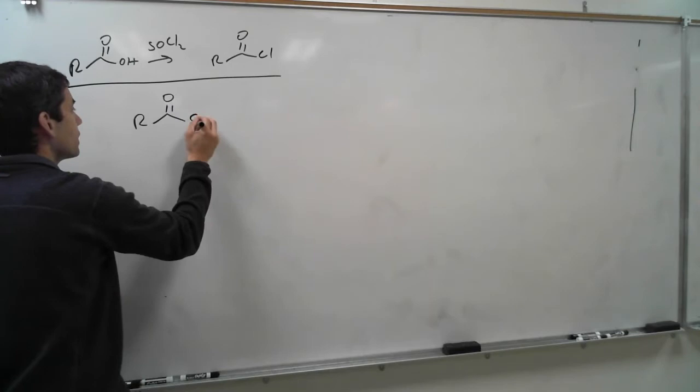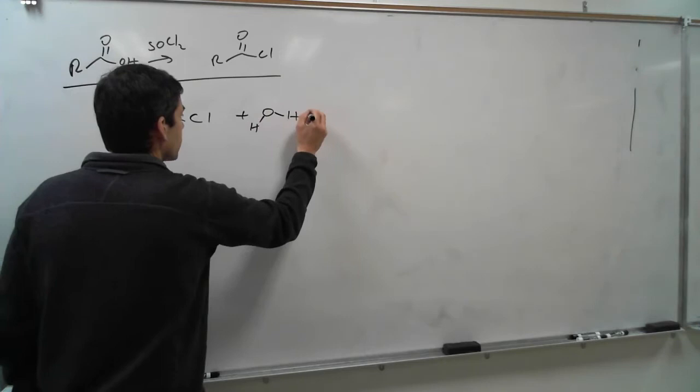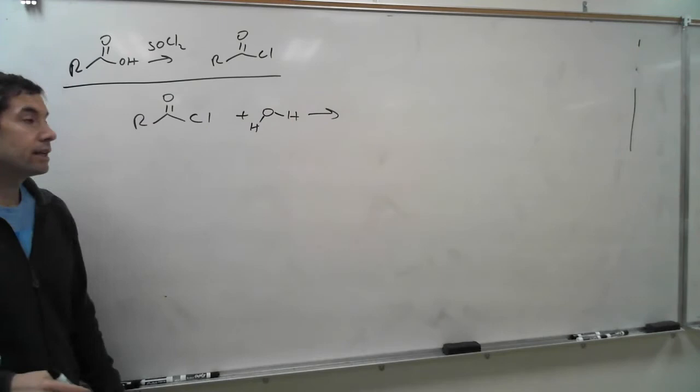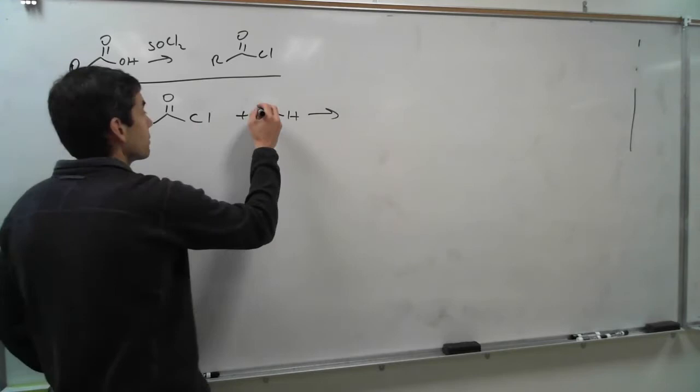The mechanisms of these reactions are all going to be very similar. Let's start with the initial one. Let's take water and react it with our acid chloride. Remember, this chlorine is going to be a very good leaving group — once it leaves, it's going to be very stable when it comes off.